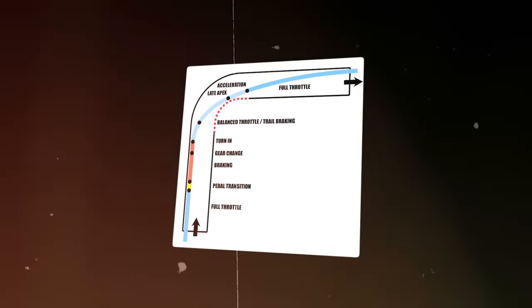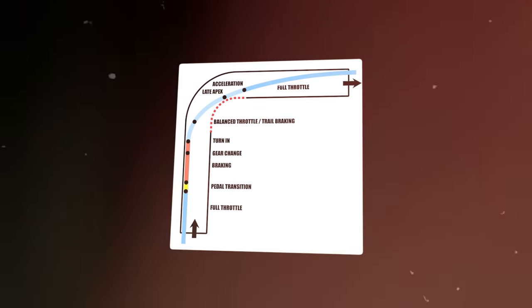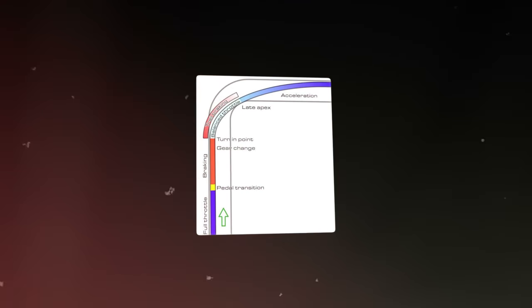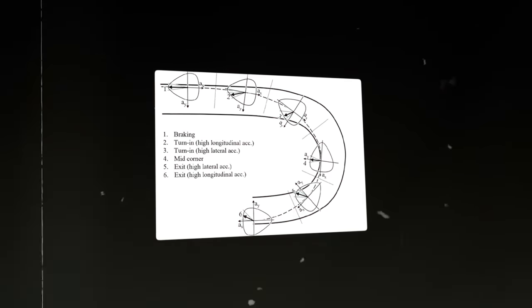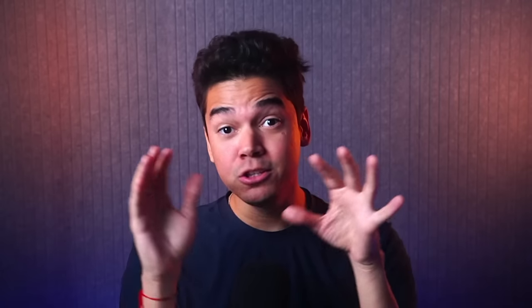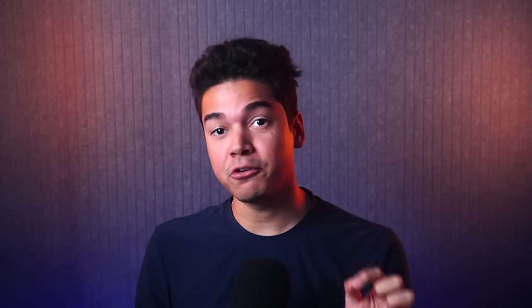If you look around on the internet, you're going to find a lot of attempts on dividing the corner in many stages — sometimes five, six, seven steps. I don't believe these explanations work because they're too complicated. So I have created a simpler way to divide the stages of a corner.